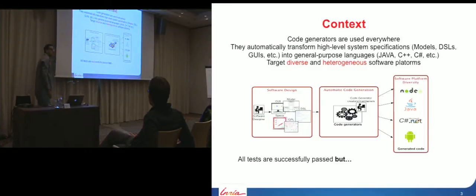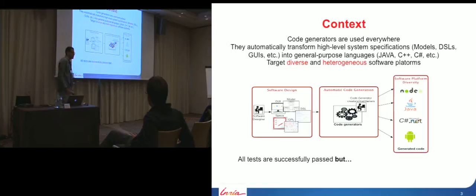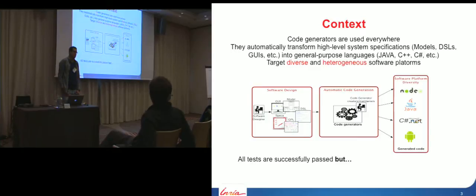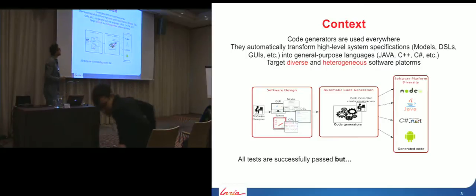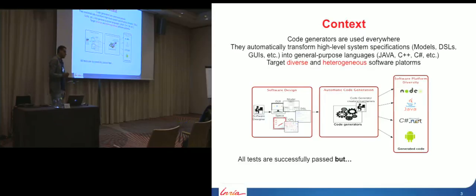First I will introduce the context of this research work. As you know, code generators are used everywhere and are widely used in industry. Code generators are needed to transform high-level system specifications, defined as models, into general purpose languages such as Java, C++, and so on. They also target diverse and heterogeneous hardware and software platforms.